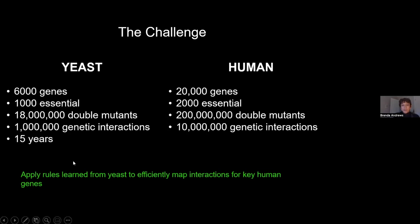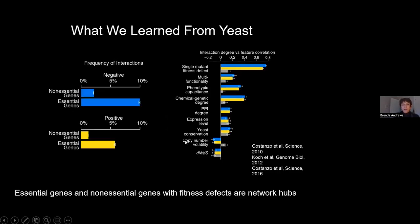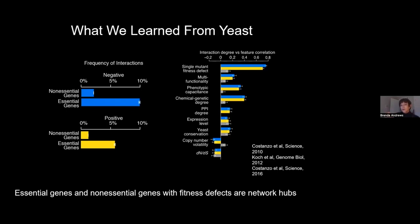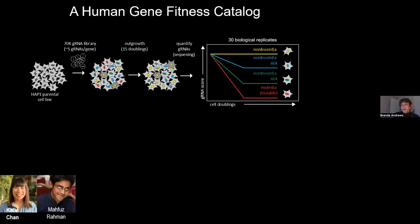The general strategy is to apply rules learned from yeast to efficiently map genetic interactions for key human genes. One important thing we learned is that certain features of genes mean they are hubs on the genetic interaction network. Essential genes are hubs, participating in many more positive and negative genetic interactions than non-essential genes. For non-essential genes, the feature that most predicts participation in many genetic interactions is single mutant fitness: if knocking out a non-essential gene causes a growth defect, it is far more likely to have many genetic interactions than a mutant with no fitness phenotype.